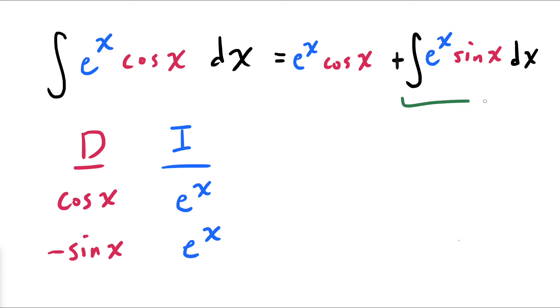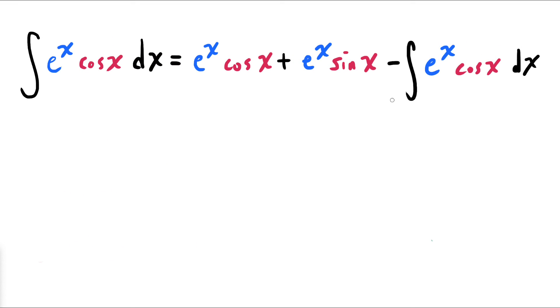By integrating by parts, we are at a situation where we have to integrate e to the x sine of x, to which we integrate by parts again, from which we end up with this expression.